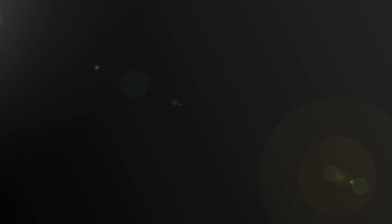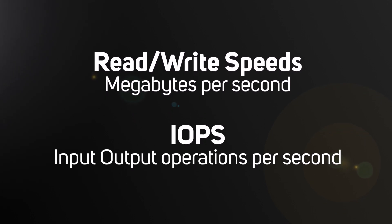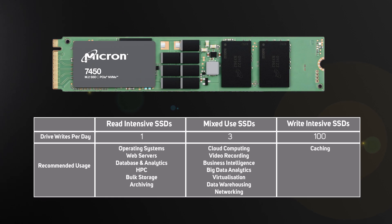Now that we understand how form factors may affect your choice of SSD and server chassis, let's consider the performance side of things. Drive performance is usually broken down into read and write speeds given in megabytes per second, and IOPS, which is input/output operations per second. A typical read-intensive SSD such as a 1.92 terabyte Micron 7450 Pro has a read speed of 6,800 megabytes per second and a write speed of 2,700 megabytes per second, but it's only rated for one drive write per day.